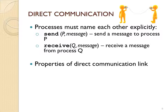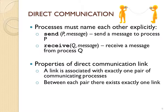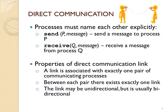The first thing we'll discuss is direct communication. Direct communication means that only two processes are involved and they communicate with each other directly. The operating system sets up the link between them, and they communicate without using a mailbox, buffer, or anything else. The link is associated with exactly one pair of processes, and the link may be bi-directional, meaning communication can go in both directions, though it may also be unidirectional.